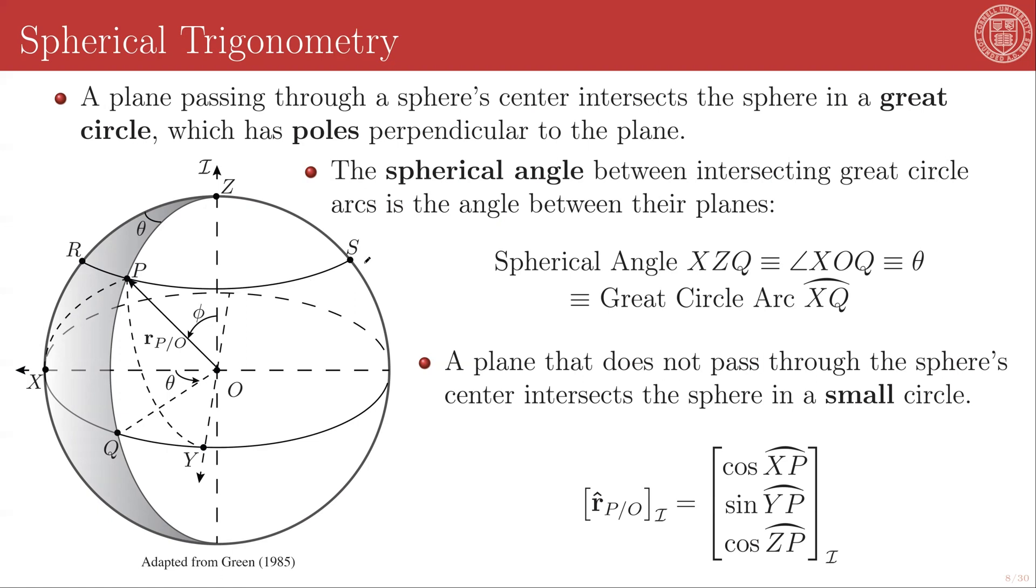And so R, P, and S is an arc of a small circle. The great circle will have two points that are perpendicular to its plane and on the unit sphere, and those are called the poles. So Z here is a pole of the great circle that has an arc X, Q, and Y. And if you're mapping in your head to concepts that you're probably already familiar with, you can think of this as the equator, and this is the north and the south pole of the Earth, for example, in the model where the Earth is a perfect sphere.